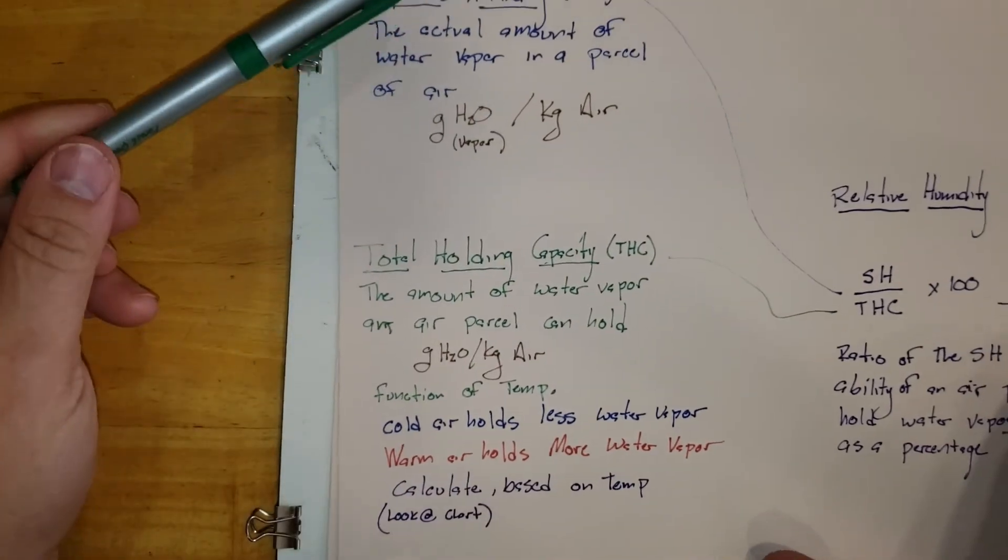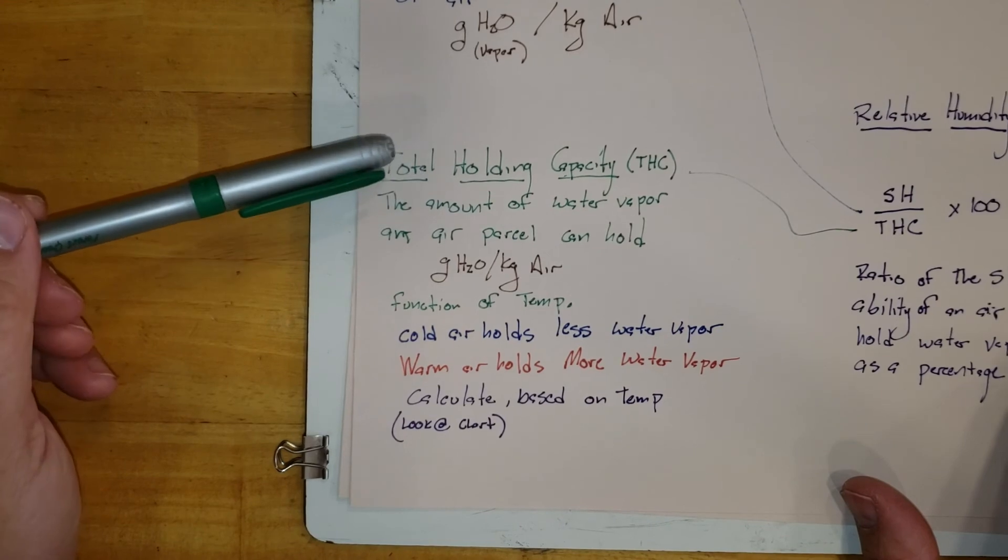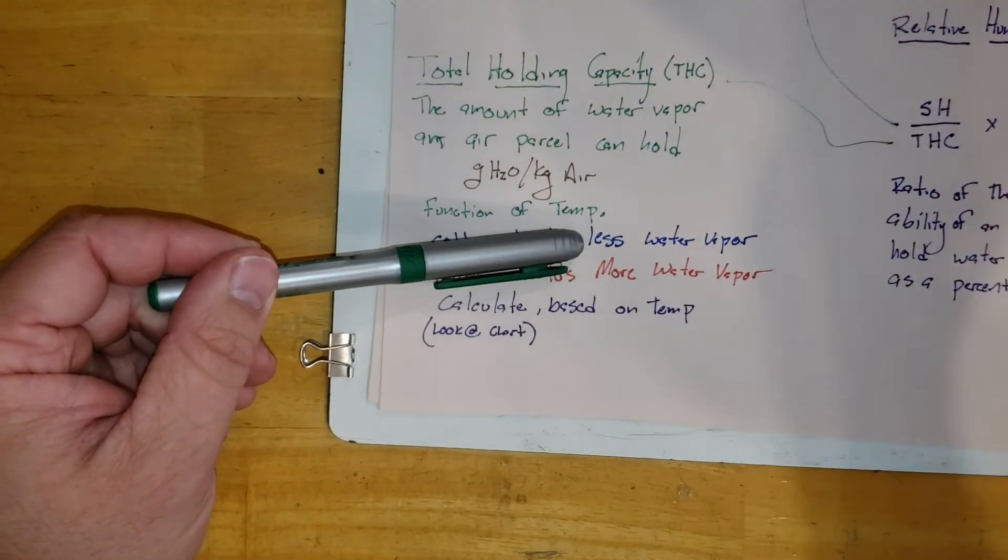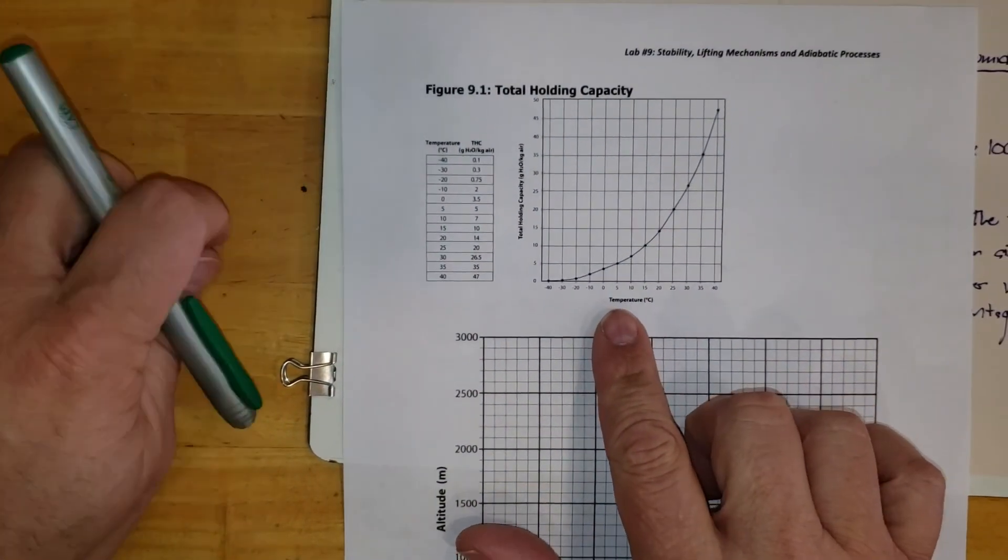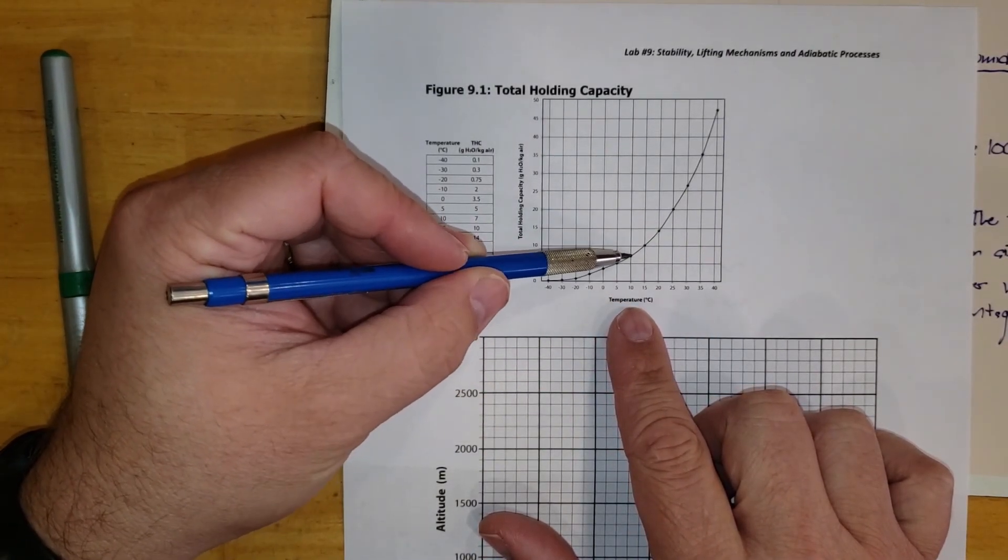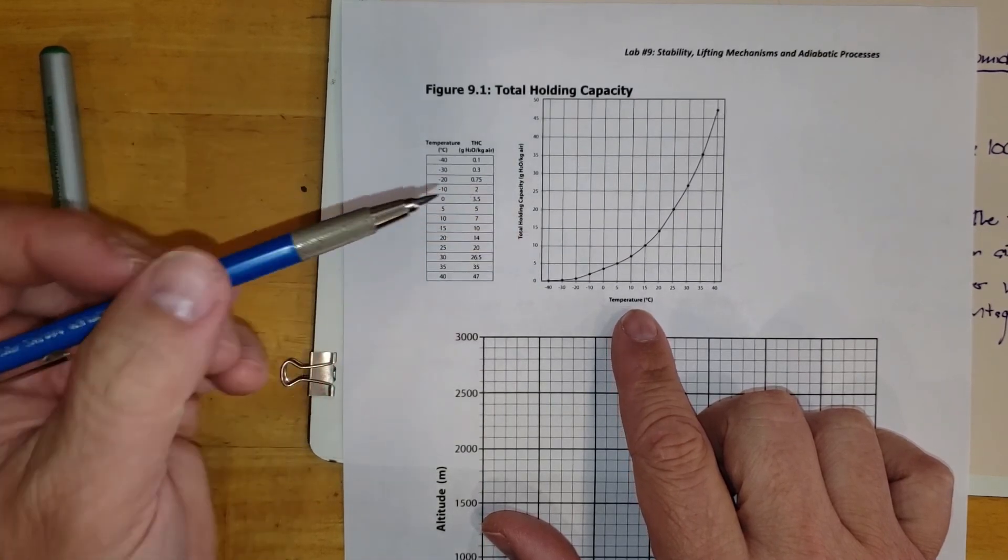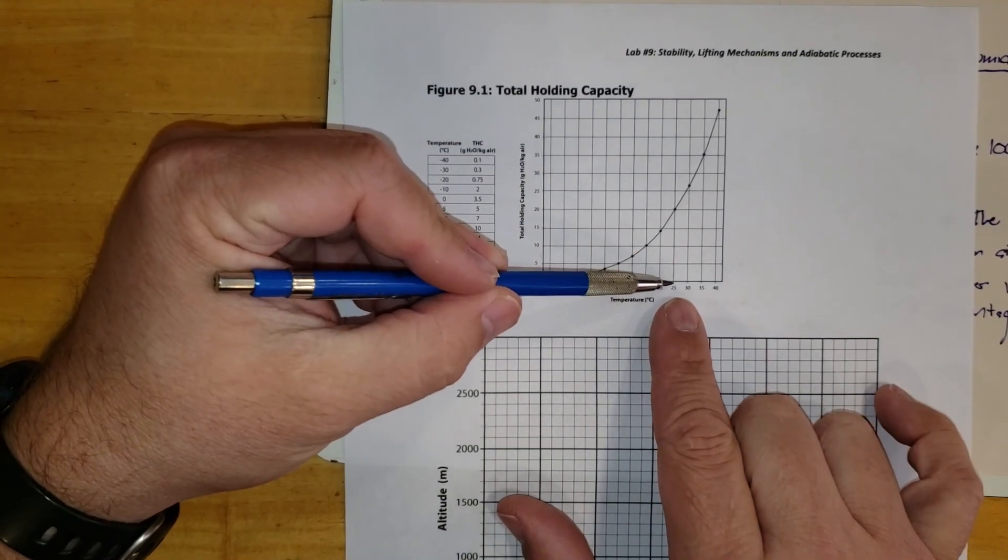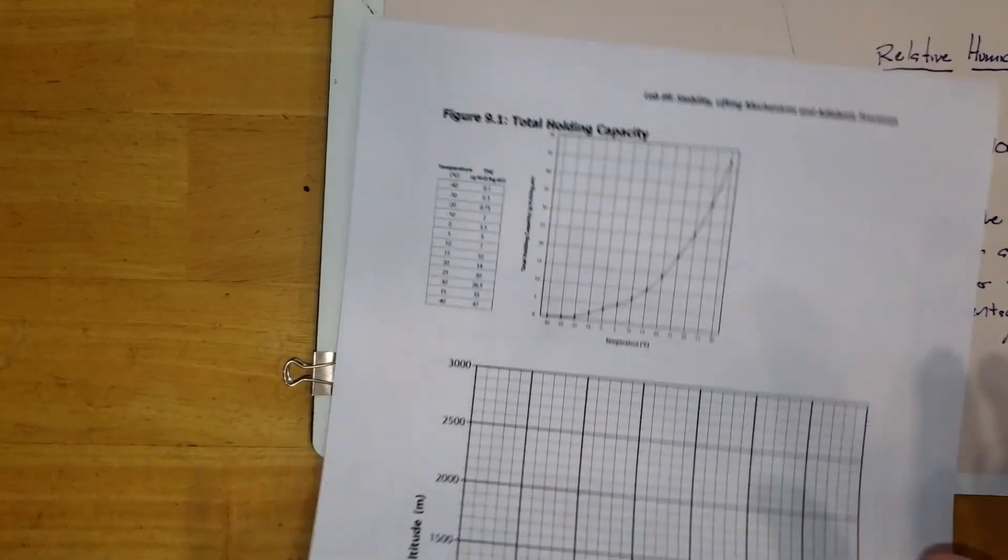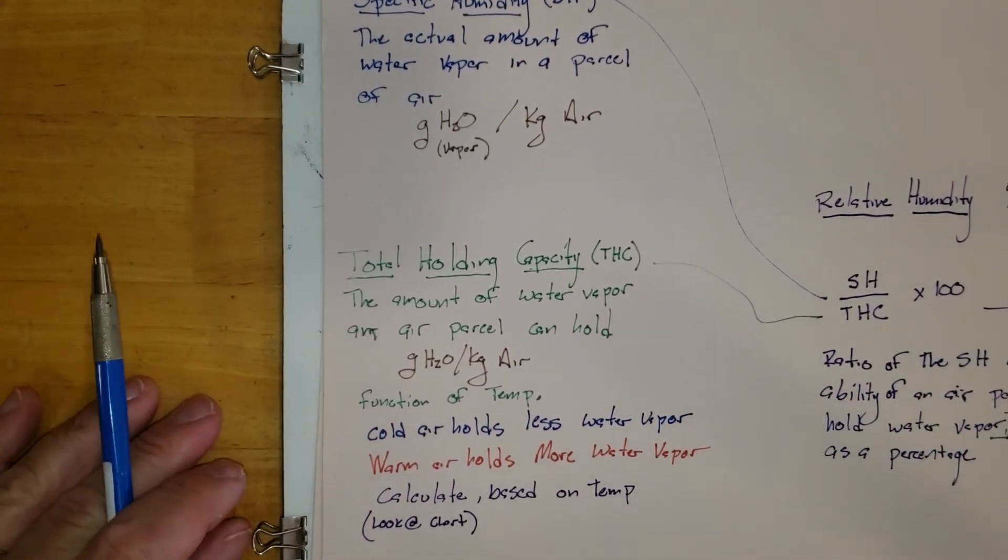Now what we're going to find is that our specific humidity may stay the same, but even as we go through our day, the temperature is going to be changing. And so when it's very cold, this number is going to be lower. When it's early in the morning and it's chilly outside, we might have temperatures that are 5 degrees or 10 degrees outside, and there our total holding capacity is only going to be about 7. However, we wait till later in the day and it warms up to 25 degrees, and then our total holding capacity may be something more like 20. So the specific humidity may stay the same, but the total holding capacity certainly will change as we go through the day.